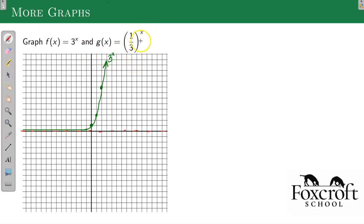What about 1 third to the x? Well, 1 third to a positive value is 1 third. 1 third squared is 1 ninth. So now when I'm plugging in these positive numbers, I'm getting out these small numbers. So the horizontal asymptote is actually going to be the same, but now it's going to the right is when I kind of flatten off.